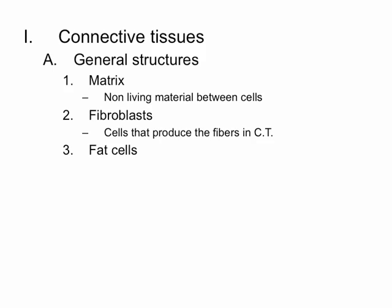The next type of cell you may find in some connective tissues are fat cells. Fat cells are called adipocytes. 'Cyte' means cell, and 'adipo' informs us that it is a fat cell. They contain lipid, which is a storage form of fat.